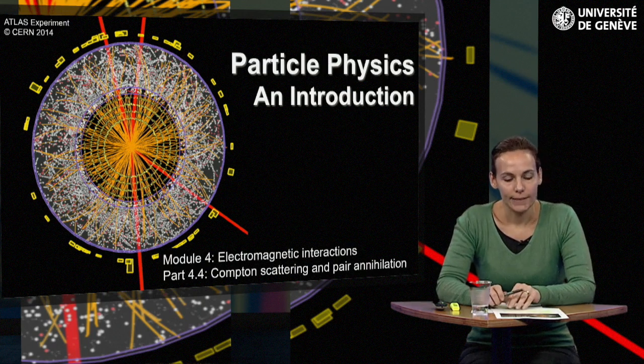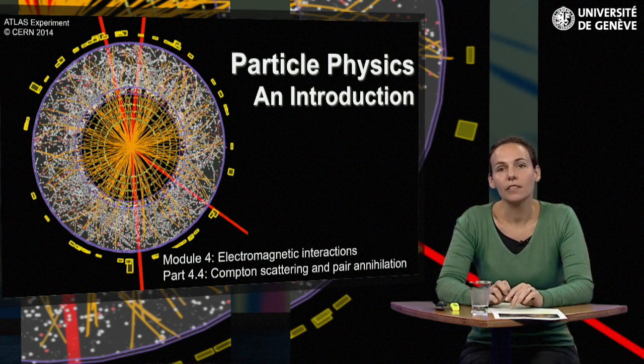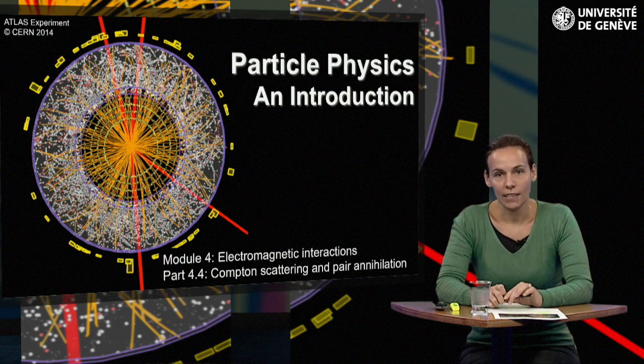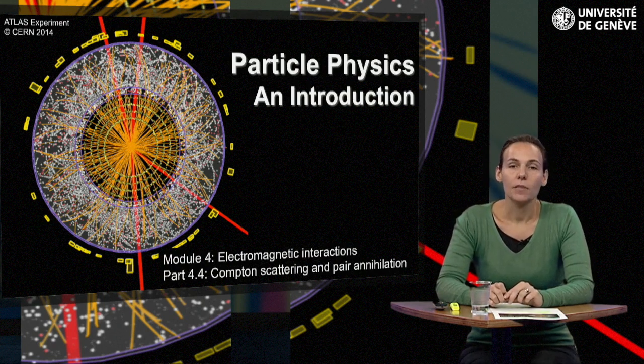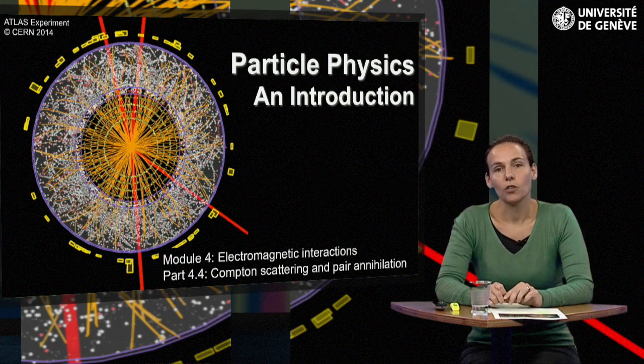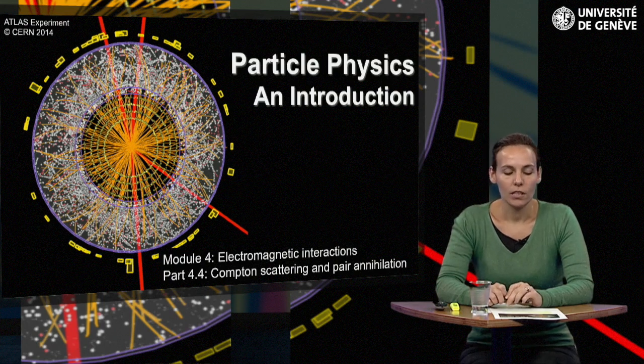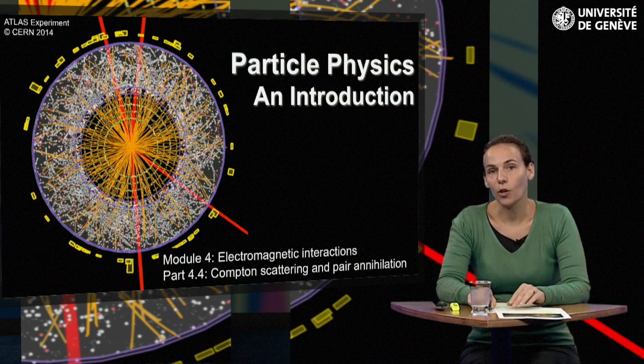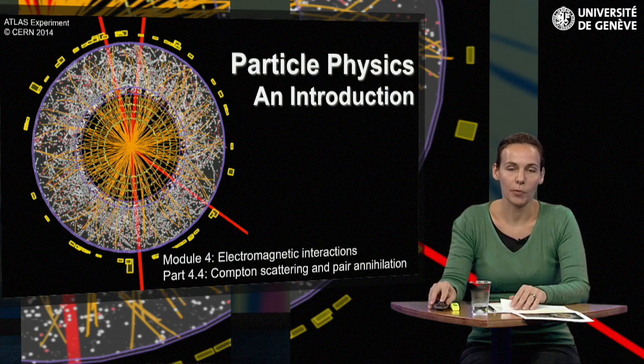After following this video you will be able to characterize Compton scattering which is the elastic scattering between a photon and an electron, describe how the polarization of the photon influences the process, and understand why the annihilation of electron-positron pairs into two photons has similar properties.